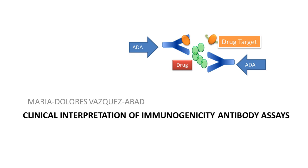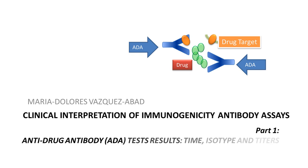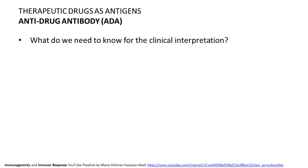These videos are standalone, so you can watch this one on its own. This video relates to the antibody assays and is divided into two parts. Part one covers how to interpret anti-drug antibody test results in terms of the time of collection, the isotype, and the titers, and why you should know at least a little bit about these.